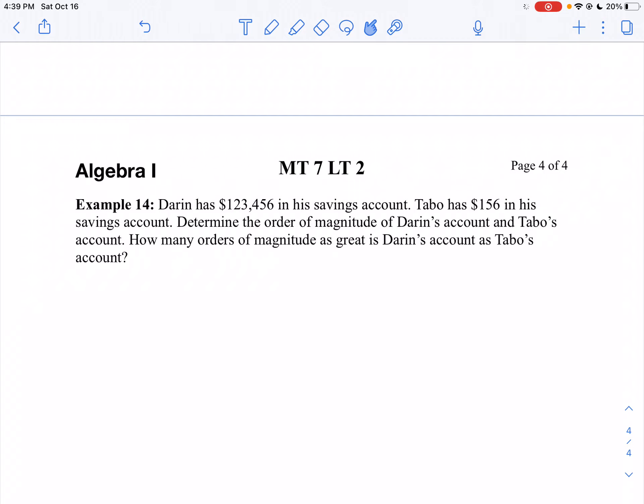Here we have an application question. Darren has $123,456 in a savings account. Tabo has $156 in his savings account. Determine the order of magnitude of Darren's account and Tabo's account. How many orders of magnitude as great is Darren's account as Tabo's account?